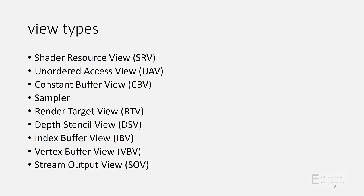Here's a summary of the various view types that can be created in DX12, mostly similar to DX11 with the addition of index buffer and vertex buffer views. These weren't views in DX11. Now while views point to some other memory in a resource, samplers are self-contained objects. The reason they're in the same list as views here is that in the DX12 API, they're managed in a similar way to some of the other views, and that'll become clearer.